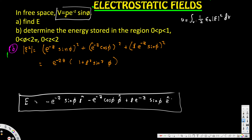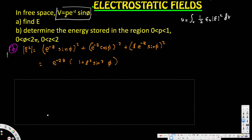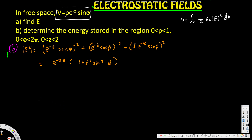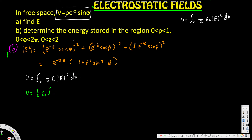Now we have the energy equation U = ∫ ½ε₀|E|² dV, and we can plug that in. U equals ½ε₀ times the integral with limits ρ from 0 to 1, φ from 0 to 2π, and z from 0 to 2, of e^(-2z)(1 + ρ²sin²φ) times ρ dρ dφ dz.